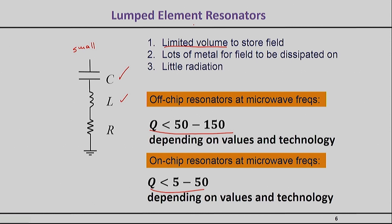If you go for on-chip resonators, it's not uncommon to end up with a Q of only 5 or 10, and in extremely good — but quite expensive — technologies you may get a Q of 50. That's why lumped element resonators in general are utilized for very forgiving filtering applications. You can't really get quality factors in the order of a thousand or above, which would be highly desirable in many systems. Essentially, you make a trade-off: something very tiny, but don't expect high quality filtering.